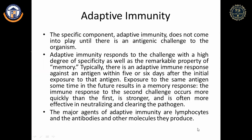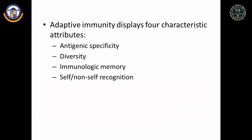B lymphocytes produce antibodies and T lymphocytes help in the proliferation of B lymphocytes. Adaptive immunity displays four characteristic attributes: antigenic specificity — if a person encounters antigen A and antigen B, each will get a specific antibody against it, so specific action is taken by adaptive immunity.